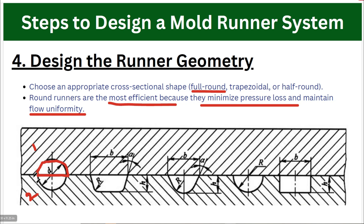The full round runner is machined from both mold halves — half from each side. Because of this, proper alignment of the two mold halves is very important.